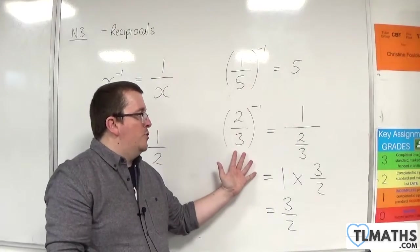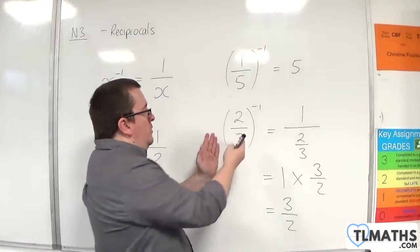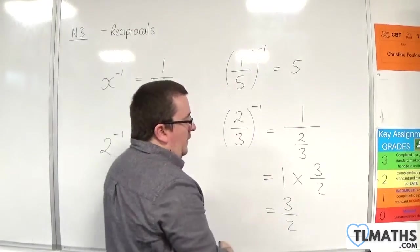When you're finding the reciprocal of a fraction, essentially, you're just flipping it upside down. 2 thirds to the minus 1 is 3 halves.